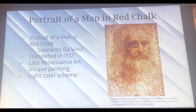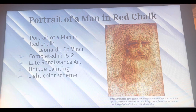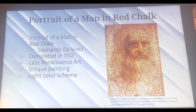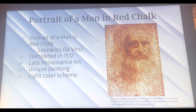Another one of his works is Portrait of a Man in Red Chalk, completed in 1512, which is an example of late Renaissance artwork. What was unique about this painting is that it was actually done with red chalk — it's not just the title. Being done in red chalk gives it a lighter color scheme, which strayed from his original path of darker colors and contrasts, making it really unique.